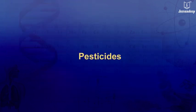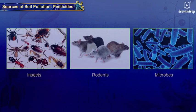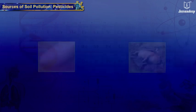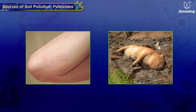Pesticides — pesticides are substances used to kill pests. Pests can include insects, rodents, and other microbes. Pesticides can be toxic to humans and other animals.